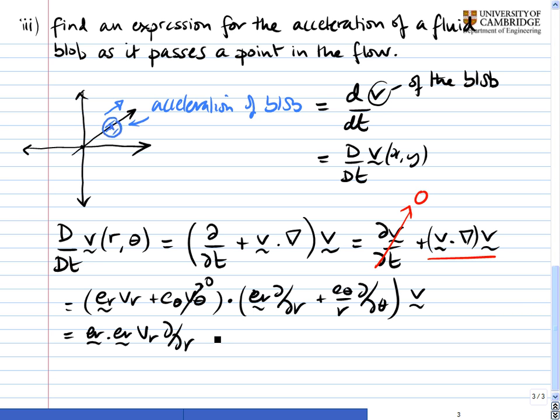so afterwards we have plus e_r dotted with e_theta. Well, we know that's going to be 0, so there's no other term there. And all that will be acting on v.